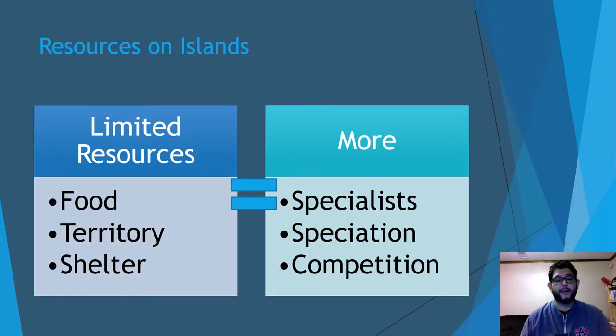So what does that mean? The idea is that if you've got limited resources, limited food, territory, shelter, things like that, that's going to lead to more specialists, more speciation, and more competition.